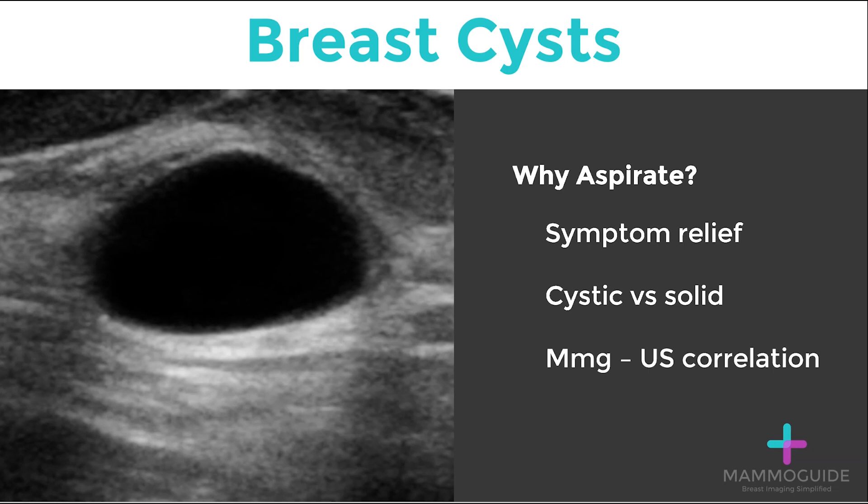The most common reason is simply for symptomatic relief. Some cysts, particularly when they get very large, can be quite uncomfortable. Aspirating the cyst makes it go away and reduces the symptoms. Another reason why you may aspirate a cyst is to determine if it is truly cystic or if it is actually a solid mass. Simple cysts are no problem, but sometimes complicated cysts filled with debris can have a more solid appearance. Rather than perform follow-up, sometimes the easiest thing is simply to put a needle in it and try and make it go away with aspiration.